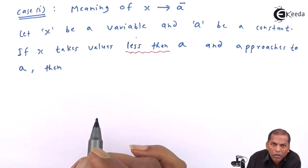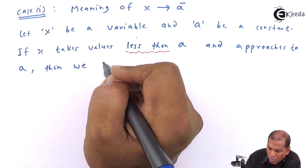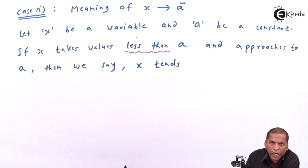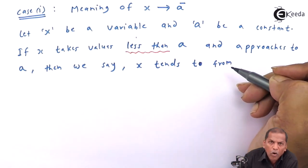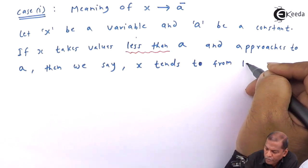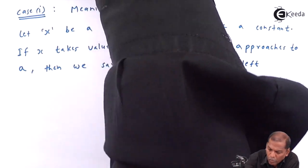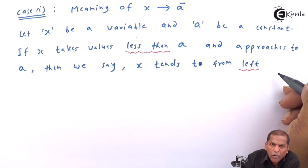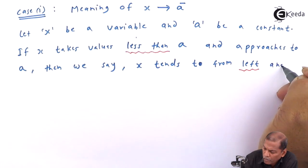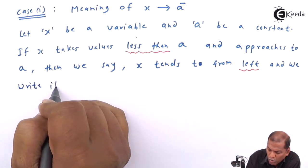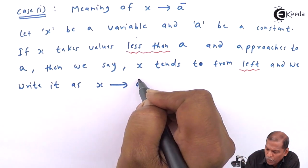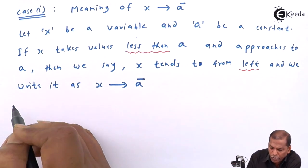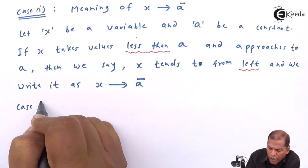then we say that x tends to a from left, and we write it as x tends to a minus. So this is all about case one.